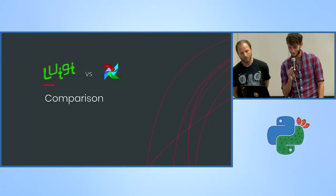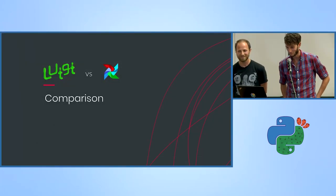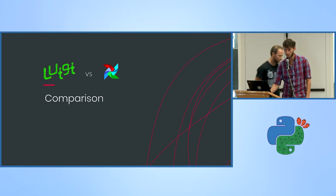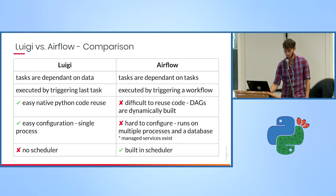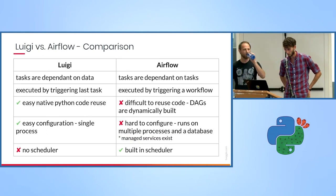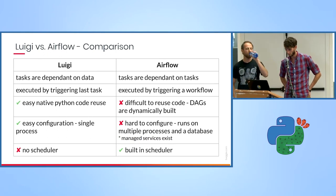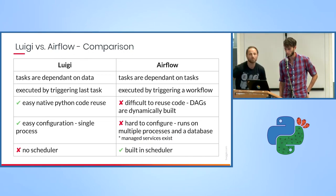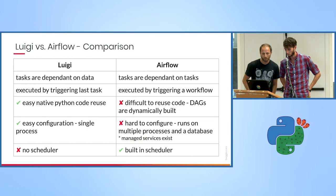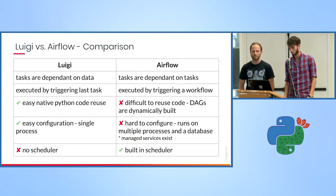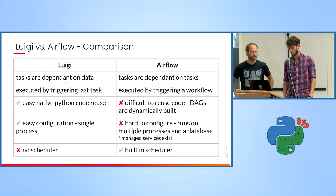Now the moment everyone's been waiting for: we will compare them. Comparing them is a bit like comparing Python's Flask framework to the Django web framework. Airflow is more like Django — it's more extensive, but also more difficult to maintain and more cumbersome. Whereas Luigi is more lean but has fewer features.